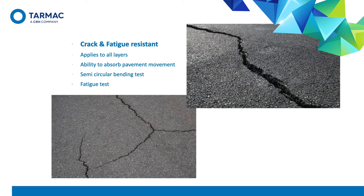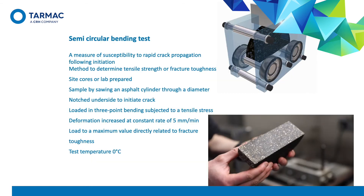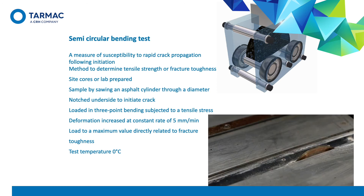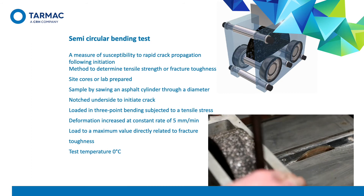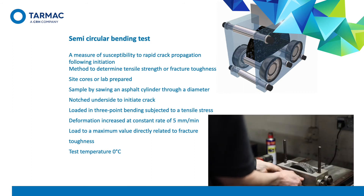Big cracking happens under big strains — for example, a thin asphalt overlay above a joint in a concrete pavement. The movements here are large, which is what the semicircular bending test is meant to replicate. Smaller cracking is fatigue cracking resulting from millions of repetitive deflections of the pavement as heavy goods vehicles pass over. Classic pavement design theory says that over time this creates a crack at the bottom of the pavement that leads to progressive failure. The semicircular bending test measures the fracture toughness of an asphalt mixture for the assessment of the potential for crack propagation.